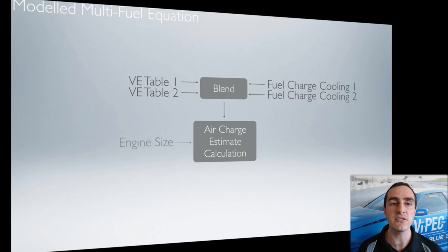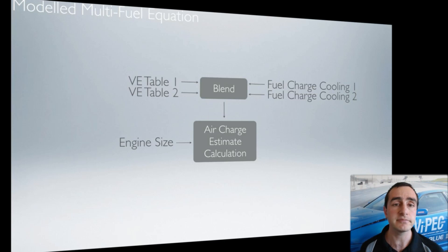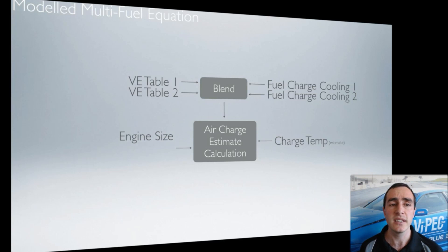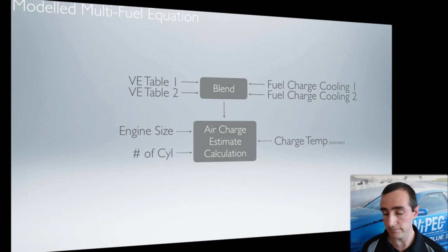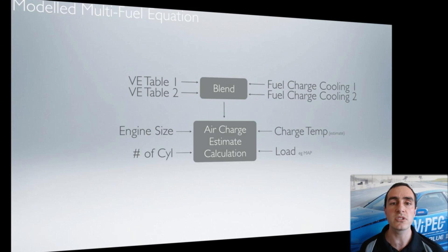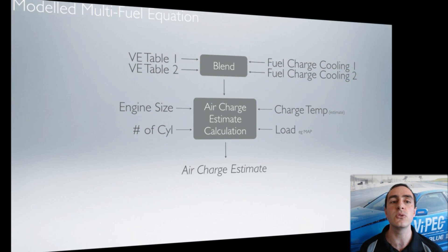This information is fed into the air charge estimate — the ECU's attempt to determine the amount of air flowing through the engine. It looks at the blend information, current engine size, current charge temperature, number of cylinders, and the load the ECU is currently seeing. All of that comes together to form the current air charge estimate, similar to the modelled fuel equation discussed earlier.